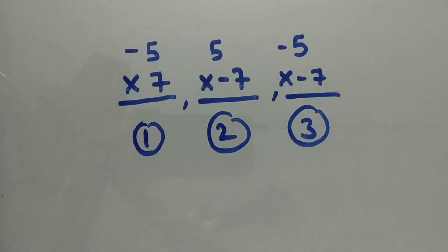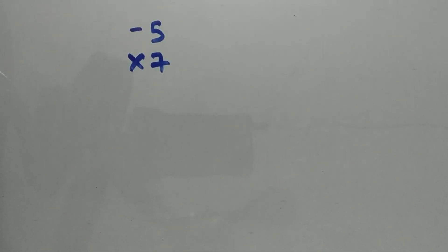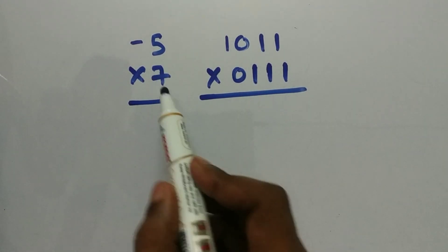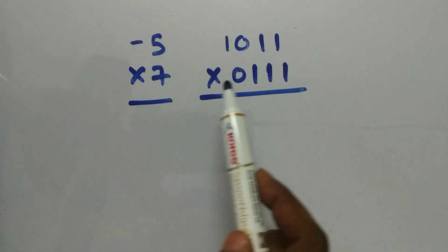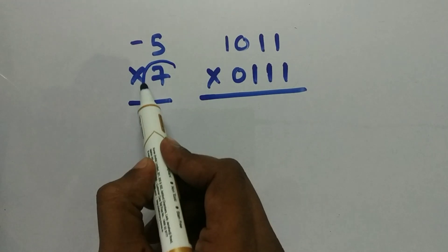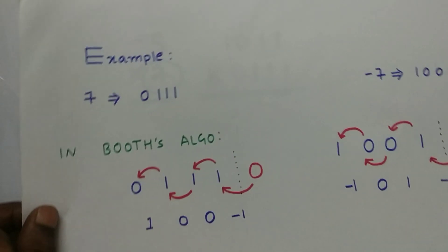Now let's go for the multiplication. We have three examples to discuss: -5 × 7, 5 × -7, and -5 × -7. Let's start with -5 × 7. To perform this multiplication you must convert -5 and 7 into binary form. -5 is represented as 1011 and 7 as 0111. To perform the multiplication in Booth's algorithm, you need to convert 7 (the multiplier) into Booth's form, which we already found to be 1, 0, 0, -1.